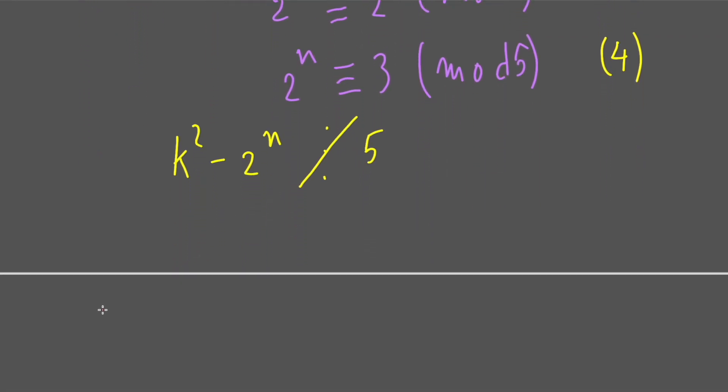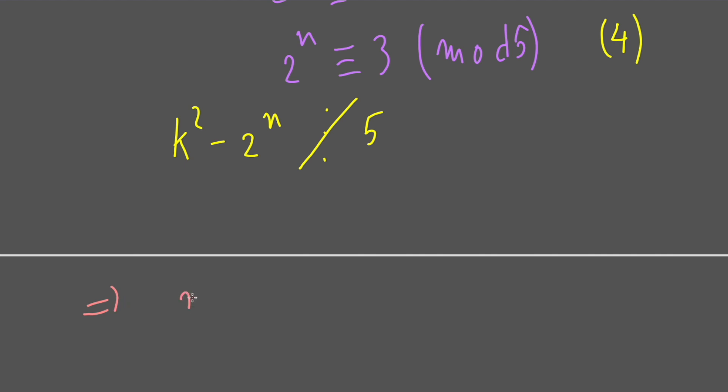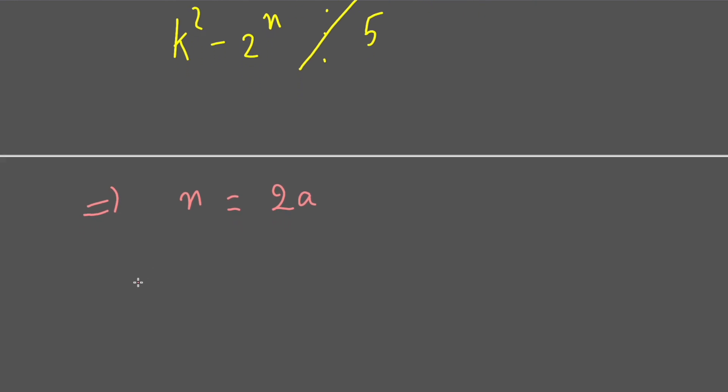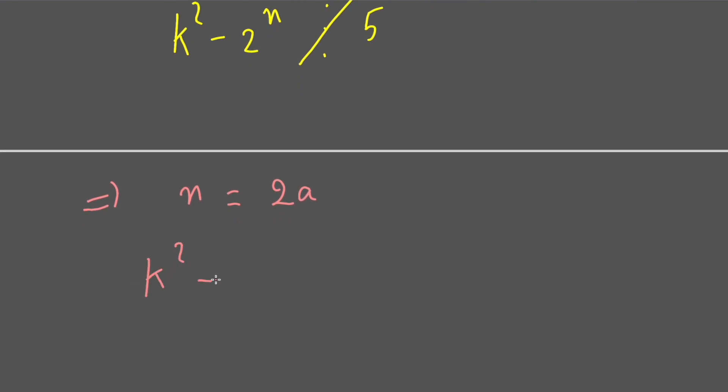So we can have conclusion that n is an even number. So if n is an even number we will have k^2 - 2^n equal to k^2 - 2^(2a), and now k^2 - 2^n equal to (k - 2^a)(k + 2^a).